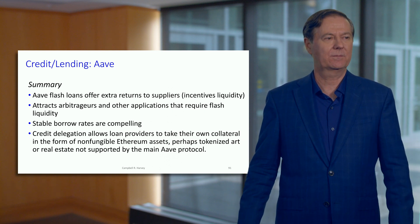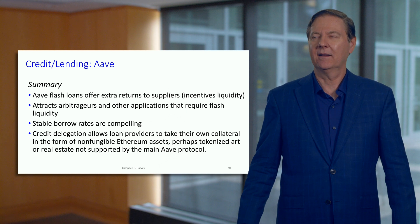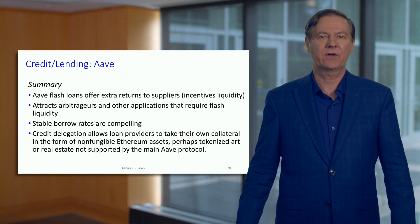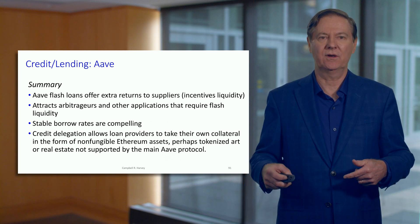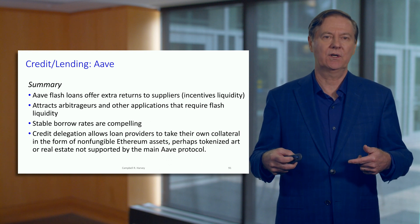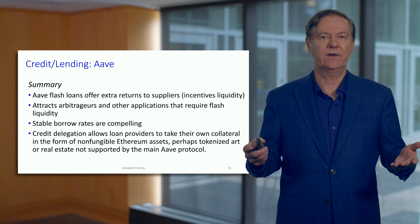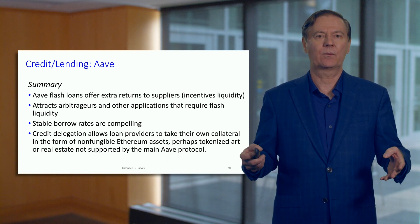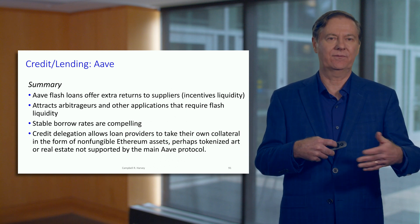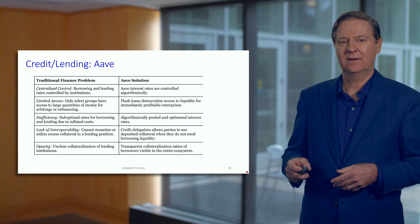Overall, Aave pioneered flash loans, which provide extra returns to their liquidity suppliers and attract a lot of business from those doing arbitrage. We talked about a simple arbitrage reducing a loan rate from 15% to 5%, but there could be other types of arbitrage where flash loans are extremely useful. Aave also offers relatively stable loan rates and this idea of credit delegation — a lot of innovation within this leading protocol.